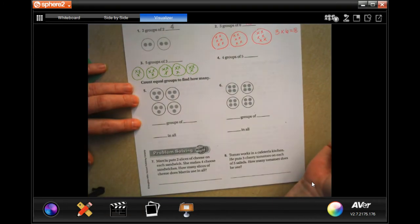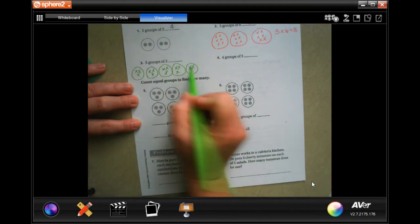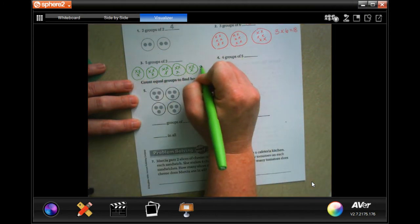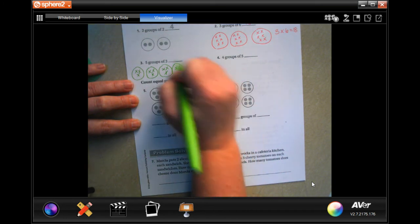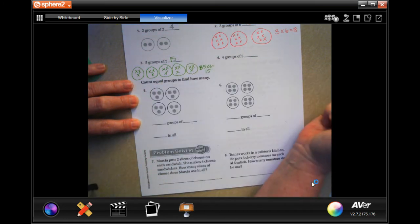Okay, so now we're going to go three, six, nine, twelve, fifteen. So five times three is fifteen. Fifteen.